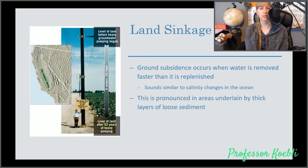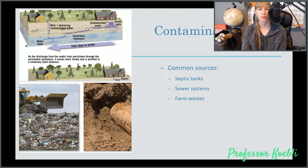Land sinkage or ground subsidence occurs when water is removed faster than it can possibly be replenished, which sounds very similar to salinity changes in the ocean. Remember, if you have water being taken out faster than it gets replenished, you have an increase in salinity and density. This is pronounced in areas underlined by thick layers of loose sediment such as the San Joaquin Valley in California. You can see here between 1925 and 1977 level of land after heavy pumping was 9 meters or 30 feet of drop, which is pretty crazy.